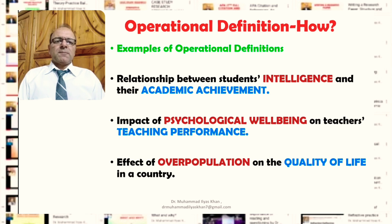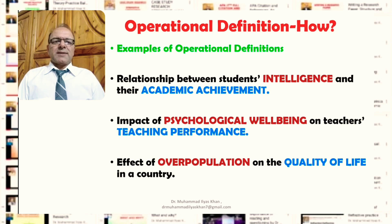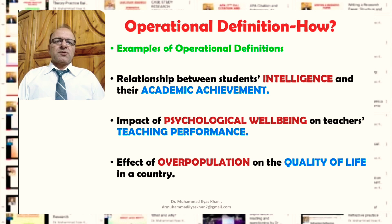The last example is: effect of overpopulation on the quality of life in a country. Overpopulation could be quite a subjective term and might mean different things to different people. For example, overpopulation could be taken in terms of the number of people in a particular geographical location or per square mile, or it could be taken in terms of the number of people per family in a particular area or country.